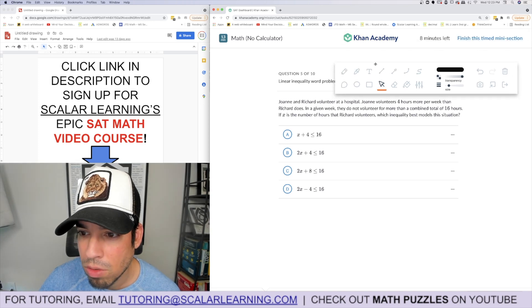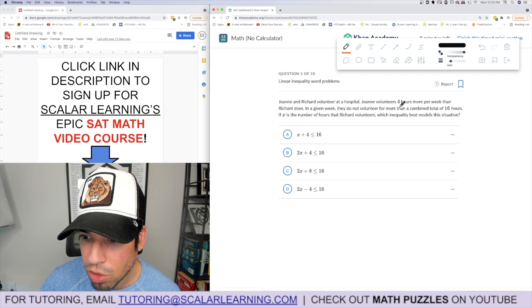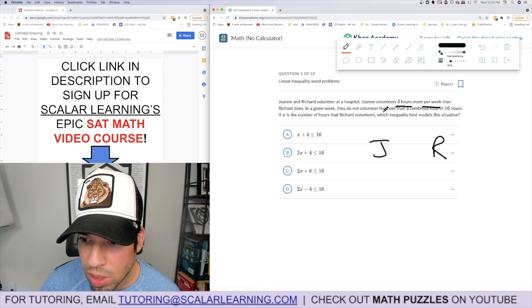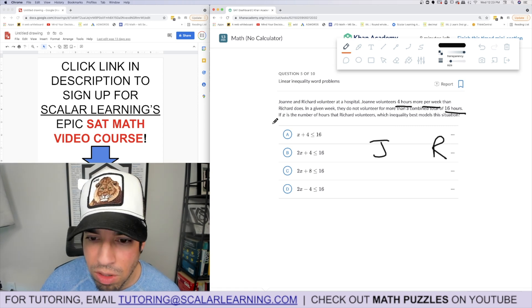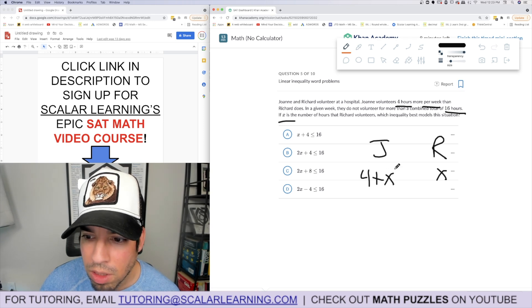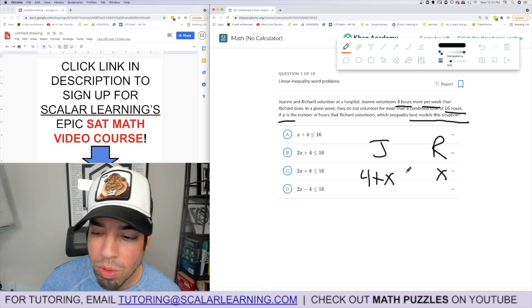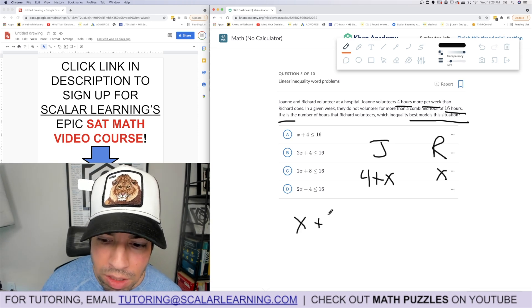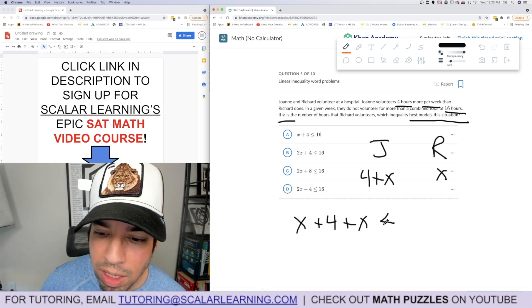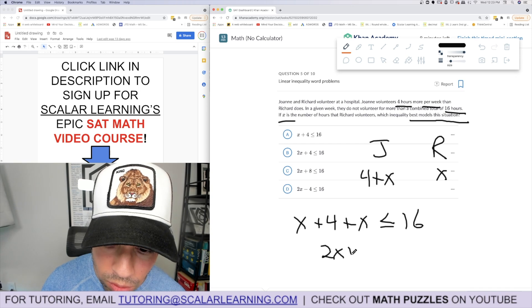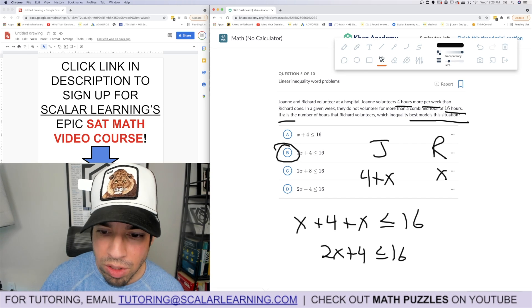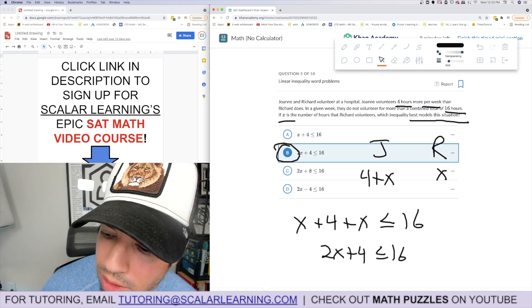Joanne and Richard volunteer at a hospital. Joanne volunteers four hours more per week than Richard does. In a given week they do not volunteer more than a combined 16 hours. x is the number that Richard volunteers. Joanne does four more than Richard, which inequality best models this situation? So I could say x plus four plus x, the combined two, no more than 16. This becomes 2x plus 4 is less than or equal to 16. Check it out, they don't even solve. We're good to go, 2x plus 4 is less than or equal to 16.